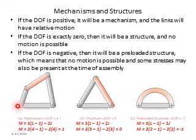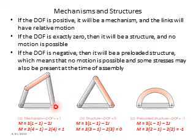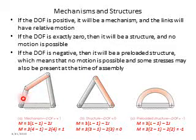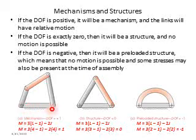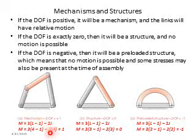For the first mechanism, let's count the number of links: link 1 is the ground or fixed link, then link 2, link 3, and link 4 — so 4 links total. Counting the joints: joint 1, 2, 3, and 4 — so 4 joints. Putting these values into the formula gives a mobility or degree of freedom equal to 1.